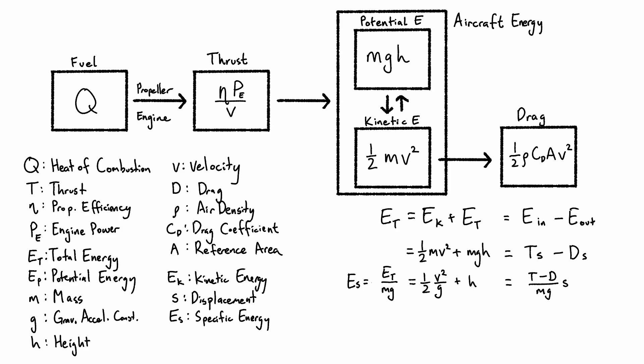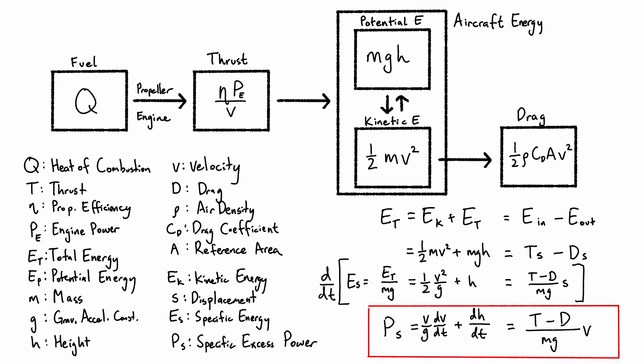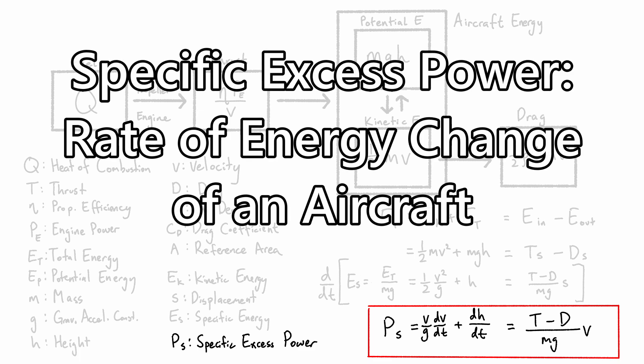Now that we have the aircraft's specific energy, we are also interested in how this energy changes over time. To find the rate of energy change over time, or power, we have to take the time derivative. Doing so gives us the specific excess power. And so in layman's terms, specific excess power is basically just the rate at which your aircraft gains or loses energy in a particular situation.